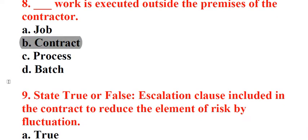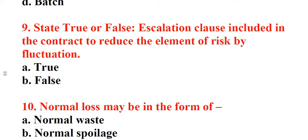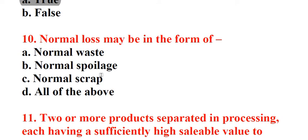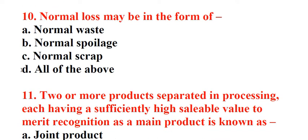Question 9: State true or false. Escalation clause included in the contract to reduce the element of risk by fluctuation. A. True, B. False. Answer: A. True. Question 10: Normal loss may be in the form of. A. Normal waste, B. Normal spoilage, C. Normal scrap, D. All of the above. Answer: D. All of the above.